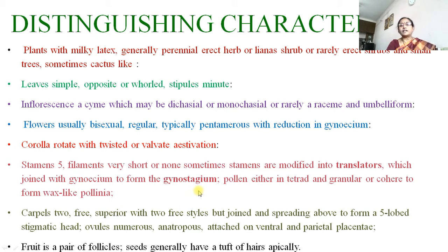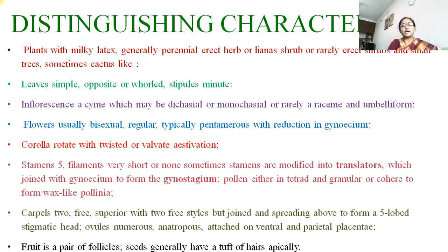The stamens join with the gynoecium to form the gynostegium condition. Pollen either in tetrads or glandular, or cohering to form wax-like pollinia or bag-like pollinia. Carpels 2, superior ovary with 2 free styles but joined and spreading above to form the 5-lobed stigmatic head. Ovules numerous, anatropous, attached on ventral and parietal placentation. Fruits in a pair of follicles; seeds generally have a tuft of hairs apically.